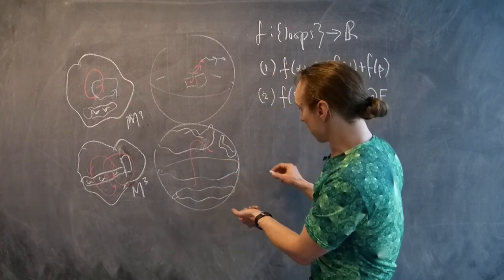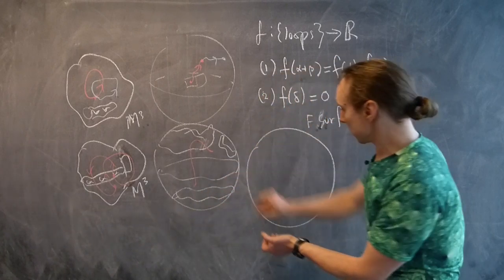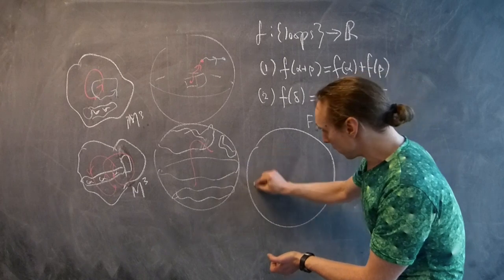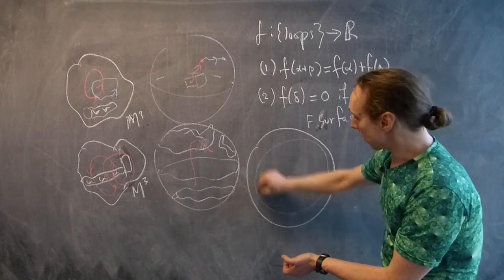So we get a function on loops to real numbers by seeing how many times we crash through the surface. And so finally, here's the last step. Here's our 3-manifold again.